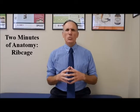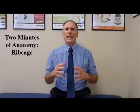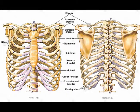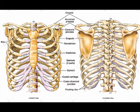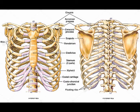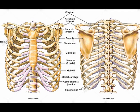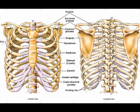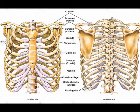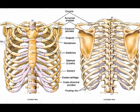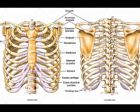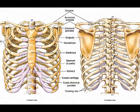The rib cage, an extremely important structure in human anatomy, is also known as the thoracic cage, and it surrounds the thoracic cavity. One of the functions of the rib cage is to protect the structures in the thoracic cavity. These organs include the heart, the lungs, the esophagus, the spleen, the liver, and the gallbladder. It's very important to protect those structures, and that's one of the functions of the rib cage.